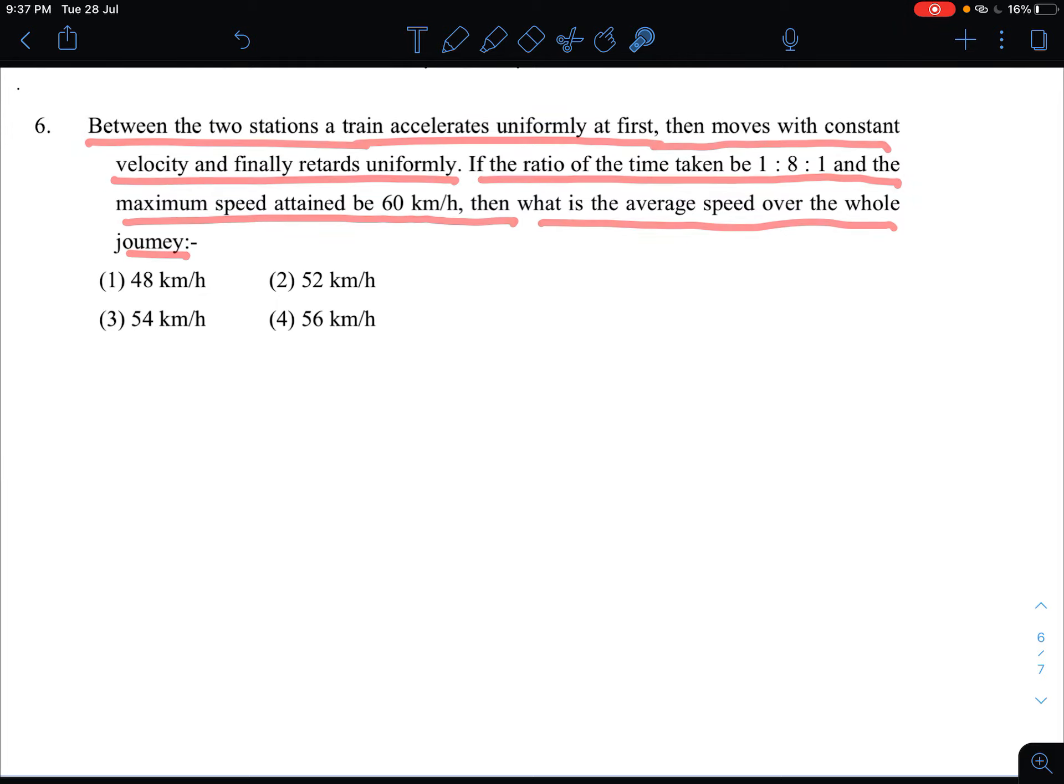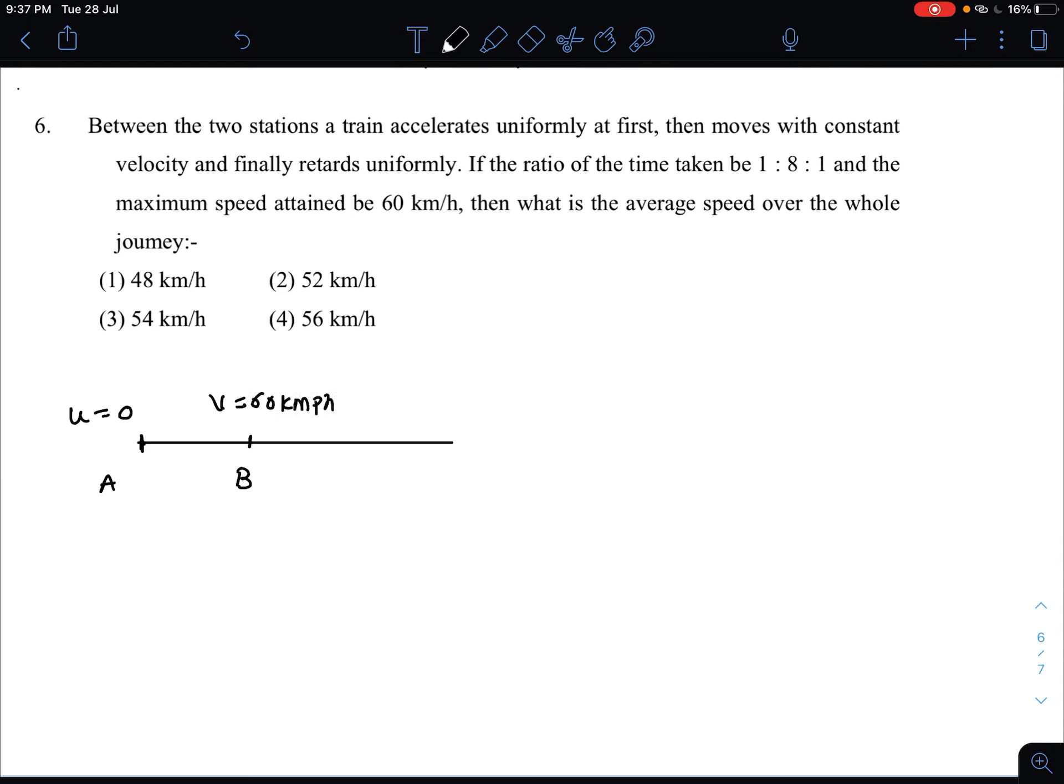Let's draw a schematic here. Starting point A, initially velocity 0 at rest. Then point B where maximum velocity is 60 km/h during acceleration. Then point C where velocity is constant at 60 km/h.